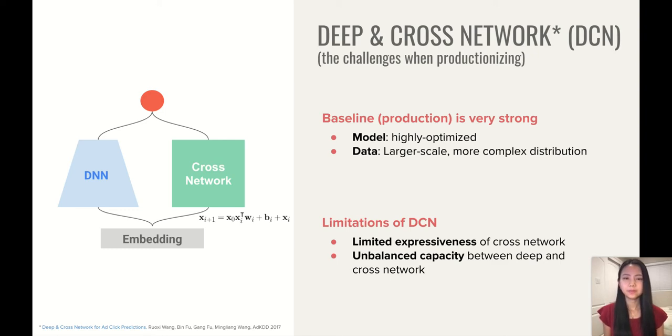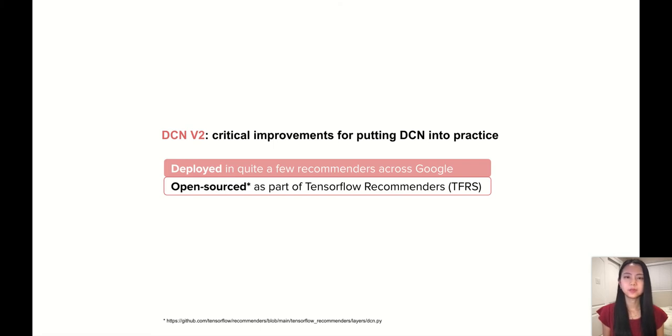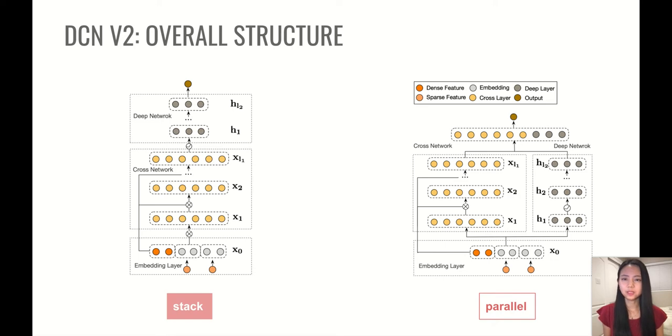Considering these limitations, we have made several critical improvements for putting DCN into practice. And we refer to the new model as DCN V2. So DCN V2 has been successfully deployed in quite a few recommender systems across Google. And it has also been open sourced as part of TensorFlow recommenders. And let's expand on DCN V2. So this shows an overall structure of DCN V2, where the left adopts the stack structure, while the right adopts the parallel structure. And a core component for each is a cross-network, which is actually very similar to the one in the original DCN, where it consists of multiple cross-layers. And also the highest interaction order would increase with layer depth. And the difference is on the design of each cross-layer.